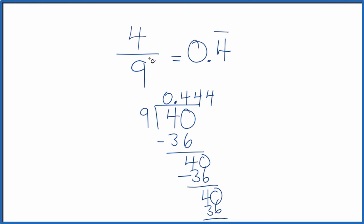So in answer to our question, 4 over 9, the fraction 4 ninths, is equal to 0.4 and the 4 just keeps repeating. This is Dr. B and thanks for watching.